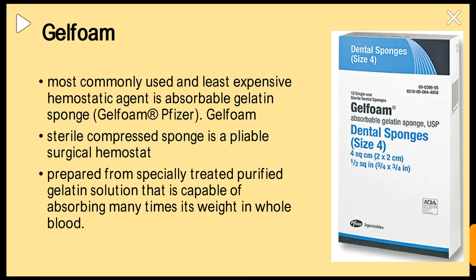Gelfoam dental sponges, size 4, come in 2×2 cm and are the most commonly used and least expensive hemostatic agent. It is an absorbable gelatin sponge manufactured by the Pfizer company. The sterile compressed sponge is a pliable surgical hemostat prepared from specially treated, purified gelatin solution.